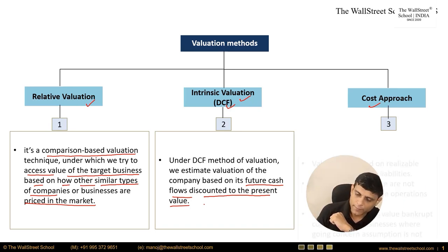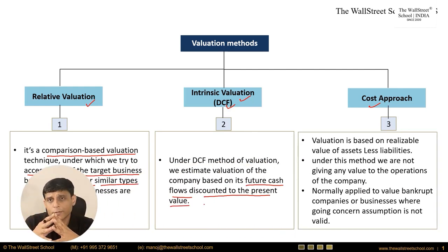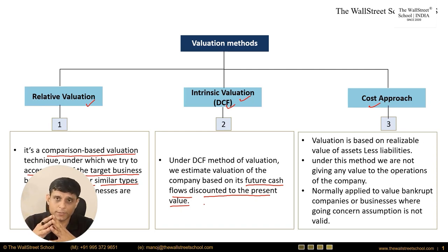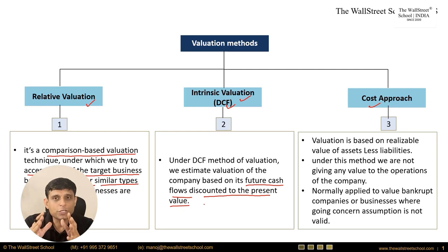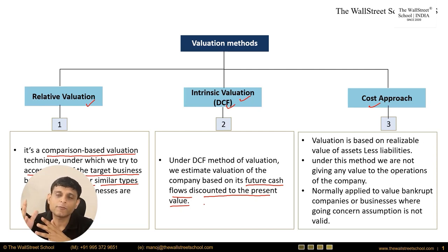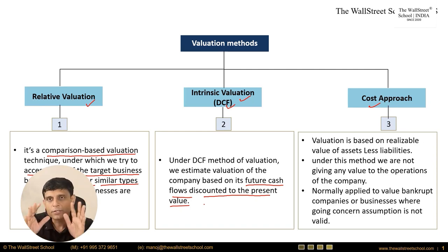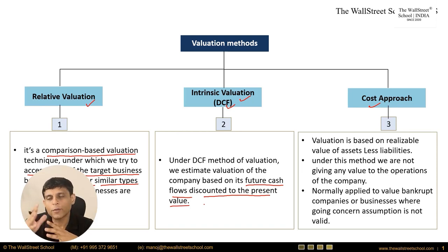The third approach is the cost approach. Under this, we find the valuation of the business based on the net realizable value of its assets less liabilities — what we can realize by selling the assets net of liabilities. We are not giving any value to the business itself; valuation is assets minus liabilities. This method is normally applied when companies are at the verge of bankruptcy, with no ongoing operations.